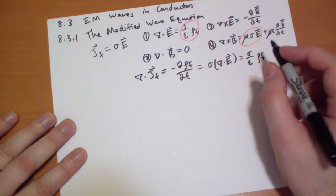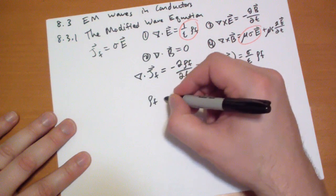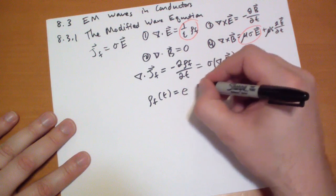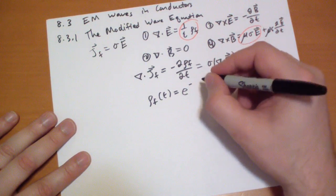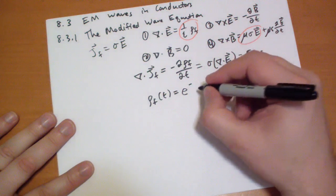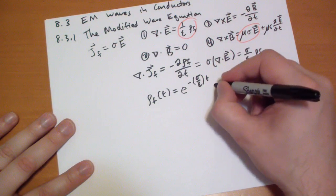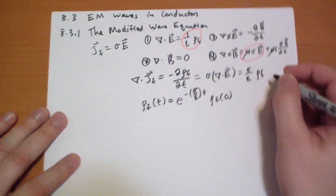Solving for that differential equation we find that the free charge as it varies over time must equal e to the minus sigma over epsilon t times the initial charge. Okay.